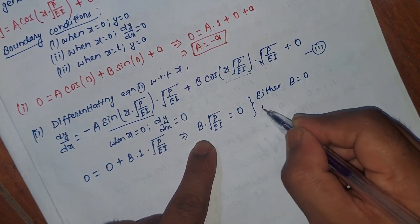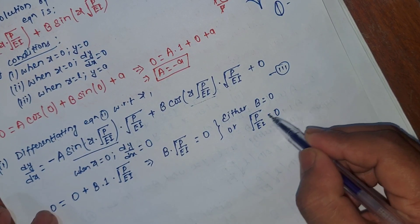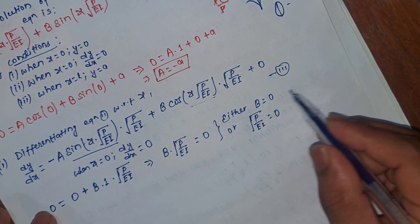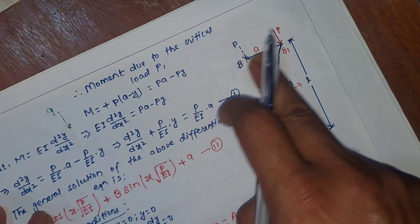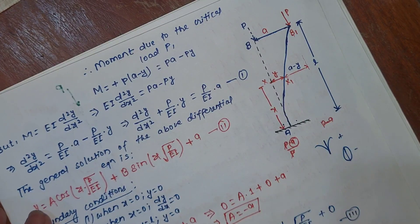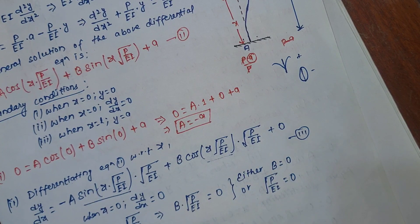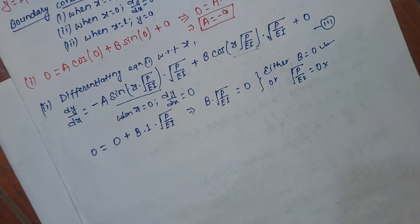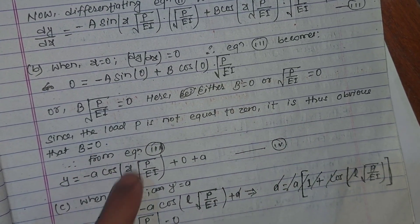From this we get either B equals 0 or √(P/EI) equals 0. If √(P/EI) equals 0, that would mean P equals 0, making the critical load zero — which is a trivial case with no deflection or buckling. Since the load P is not equal to 0, it is thus obvious that B is equal to 0.